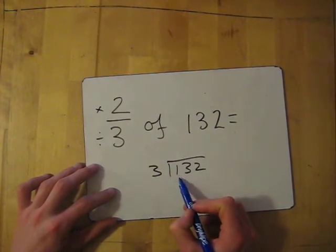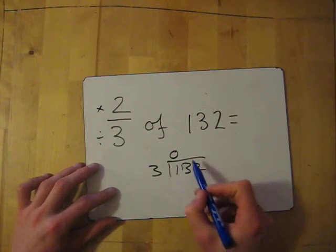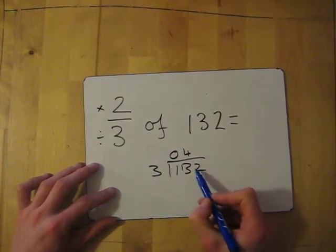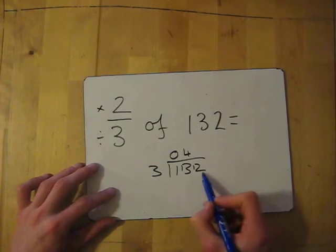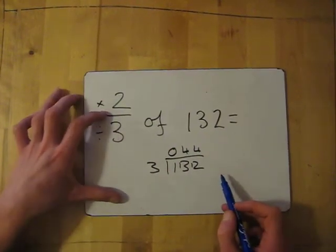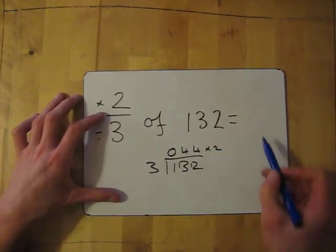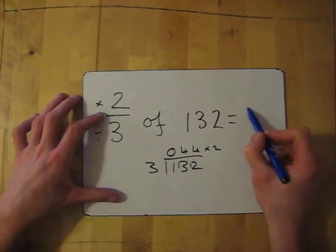So 3 into 1 doesn't go, 1 left over. 3 into 13 goes 4 times with 1 left over. 3 into 12 goes 4 times. So we've divided by the bottom, now we need to times by the top. So it's just a simple times by 2. So double 44 gives me 88.